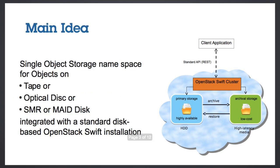The main idea is to leverage Swift as the single namespace for your storage, for your objects, which could then reside on tape media — tape drives within tape libraries. But in the same manner, you could also potentially use optical disk and optical disk libraries, or even shingled magnetic recording disks that have special characteristics which are a little bit similar to tape, or also systems that require some spin-up time, such as MAID disks.